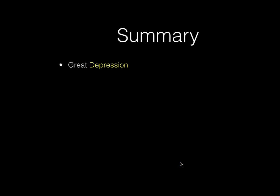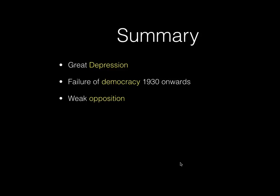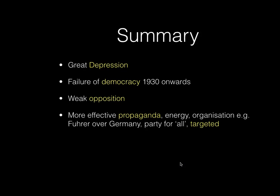In summary, the Great Depression created circumstances which the Nazis exploited more ably and effectively than other parties. The failure of democracy from 1930 onwards — Hindenburg basically ruling using Article 48 — helps the Nazis, as they had never been in a coalition government and presented themselves as strong leadership in contrast to the failure of democracy. The KPD and SPD were weak, as were the middle-class parties, so they didn't have to contend with strong opposition. They had more effective propaganda, more energy and organisation — a good example being the Führer over Germany campaign, with Hitler flying all over the place and gaining 11 million votes. They presented themselves as a party for all Germans, not just sections of society, while also targeting propaganda at different groups. Hitler's speaking skills certainly played a part — he seemed to have mesmerised and transfixed crowds. Together with a fear of communism, this contributed to the increased Nazi vote, making Hitler a more viable candidate for appointment by Hindenburg.